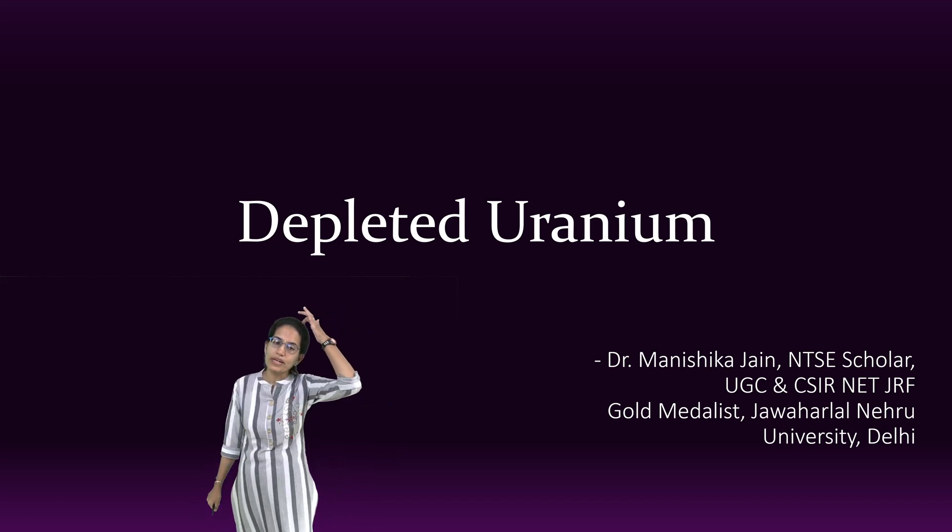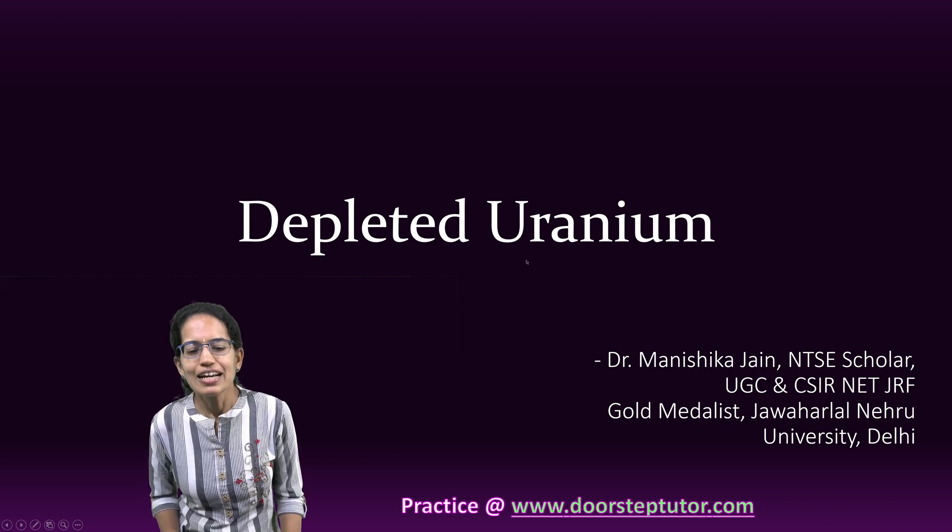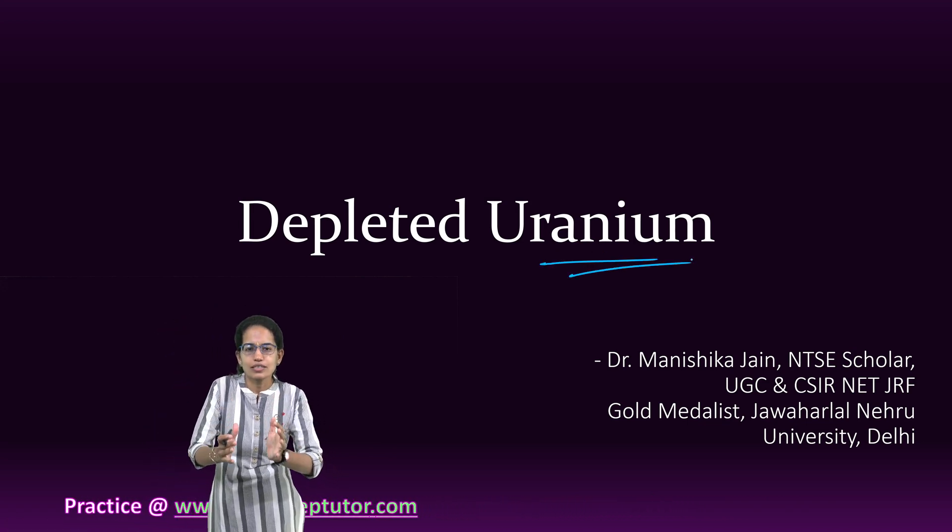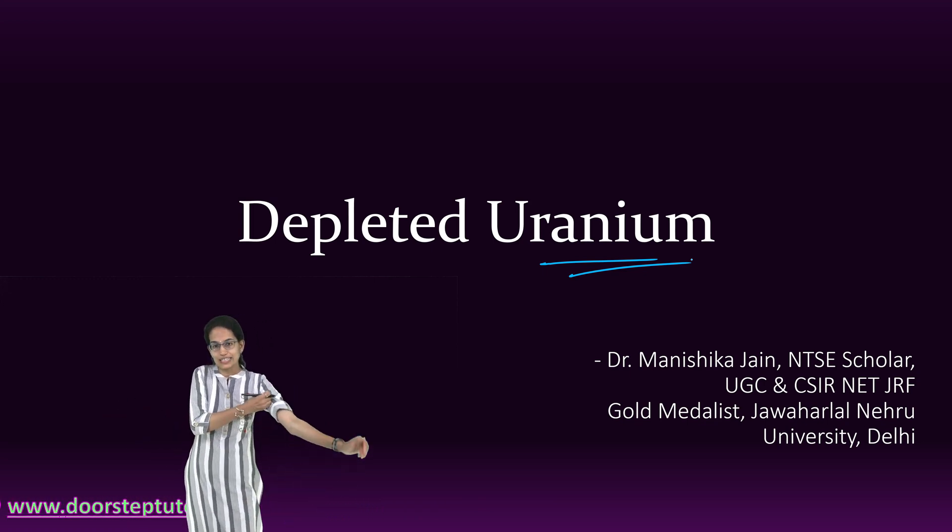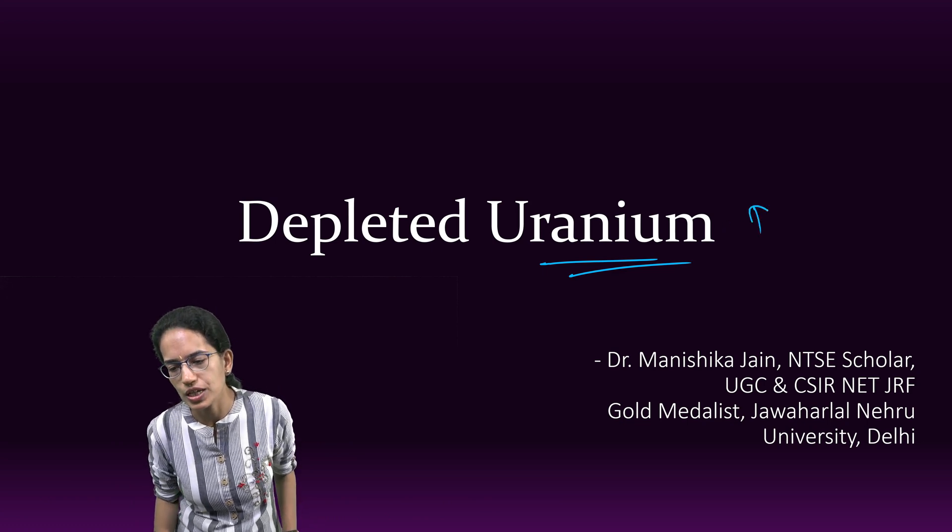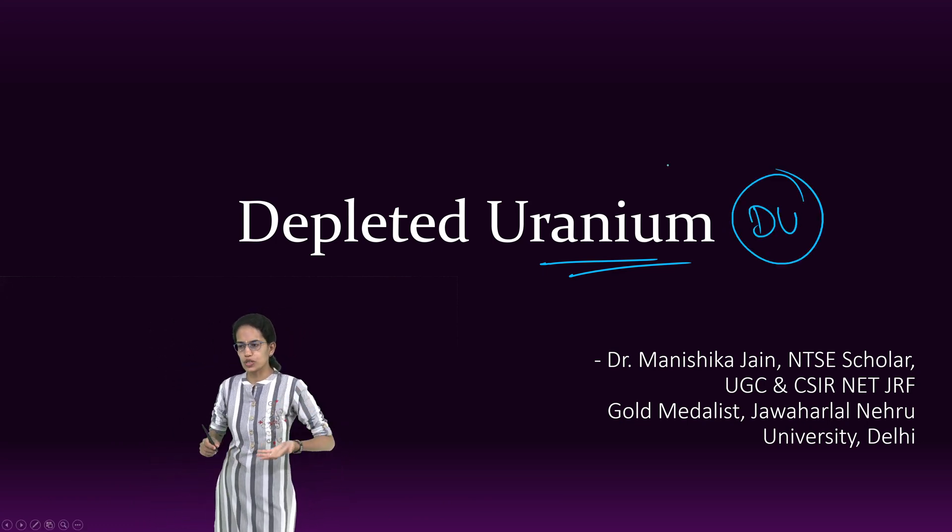Let's talk about a very interesting topic: depleted uranium. Why it is called depleted is very important. In the process of enrichment, the remaining amount of uranium that's left is still useful, and this is called depleted uranium or DU. We'll come to it in a while, but let's first understand what is uranium.